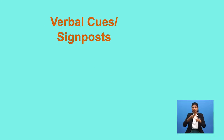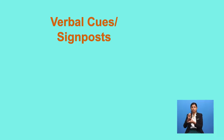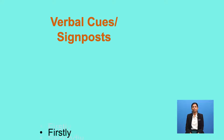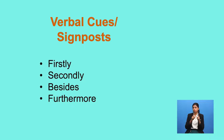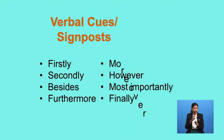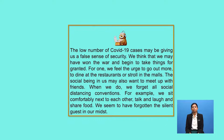So how do we recognize the main idea and its supporting details? Look out for verbal cues or signposts. These include linkers and sequence connectors — for example, words like firstly, secondly, besides, furthermore, however, finally. Let me show you a sample.